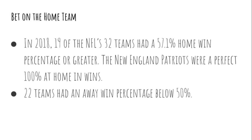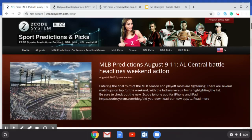The third strategy: the NFL is a league where the home team does very well. With 32 teams, last year in 2018, 19 of those teams had a 51.1% home win percentage or greater — the Patriots had 100% wins at home. Meanwhile, 22 teams had an away win percentage below 50%. That shows just how much home field advantage, home fans, and the travel demands across the U.S. affect away teams. Back the home teams when betting on NFL games this season.